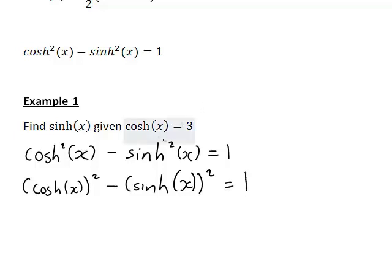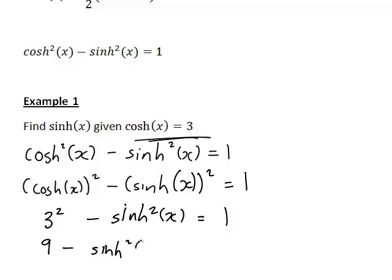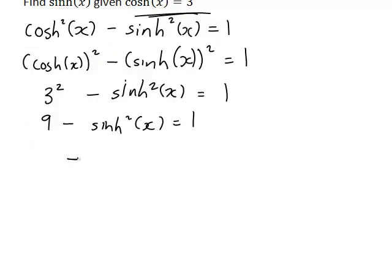We're substituting 3 in here to give us 3 squared minus sinh squared x equals 1. That's just 9 minus sinh squared x equals 1. Therefore we get negative sinh squared x equals 1 minus 9, which gives us negative sinh squared x equal to negative 8.